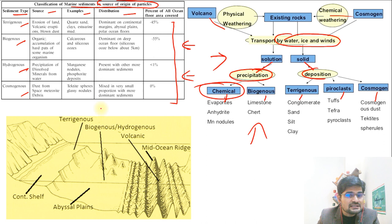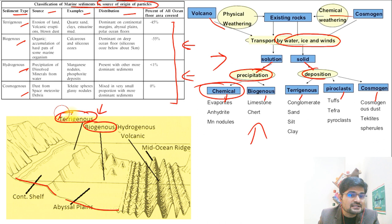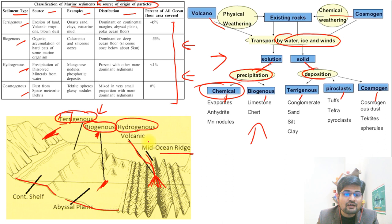Looking at this image, you have the continental shelf, then the slope, then the plains. Different kinds of materials are found at different levels. Terrigenous sediments — from terra, meaning land — are close to land. Biogenous sediments are found away in the abyssal plains. Hydrogenous sediments come from volcanic eruptions at mid-oceanic ridges where volcanic ashes and lava depositions occur.